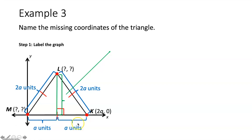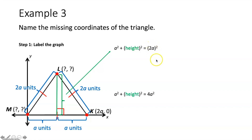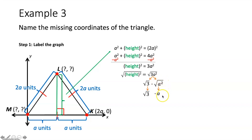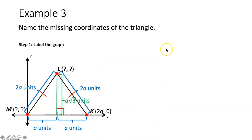The Pythagorean theorem: A squared plus B squared equals C squared. Here it's: A squared plus height squared equals 2A squared. Squaring 2A gives 4A squared. Subtracting A squared from both sides: height squared equals 3A squared. Square rooting both sides: the square root of 3A squared separates into rad 3 times rad A squared. The square root of A squared simplifies to A, so the height equals A rad 3 units.